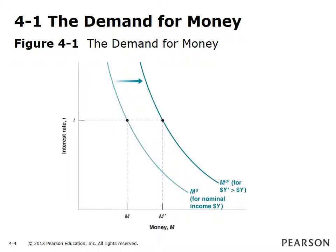Figure 4.1 shows the money demand curve. It is drawn for a given level of nominal income. It is negatively sloping, showing the inverse relationship between the interest rate and the demand for money. The interest rate is shown on the vertical axis and money demand on the horizontal axis. As the interest rate decreases, the demand for money increases. At a given interest rate, an increase in nominal income shifts the money demand curve to the right.